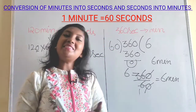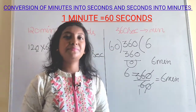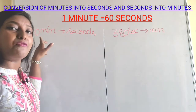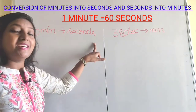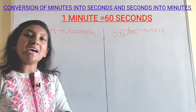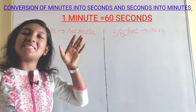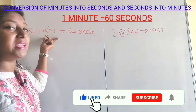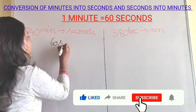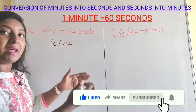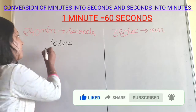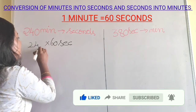Now let's see one more example. Here we are converting 240 minutes into seconds. While converting minutes into seconds, we know that 1 minute equals 60 seconds. So in the place of minutes we take 60 seconds and multiply 60 seconds by 240.